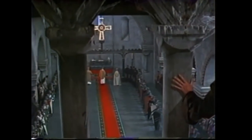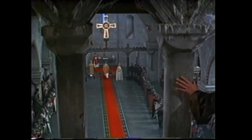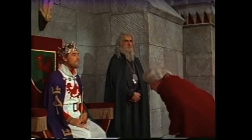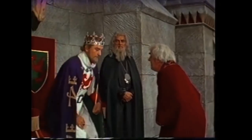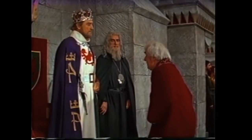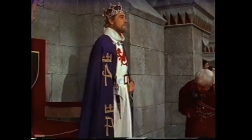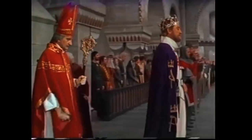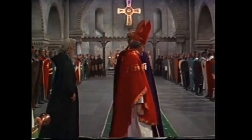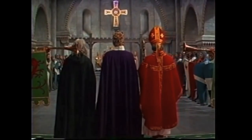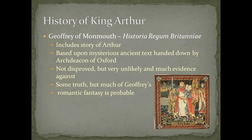Geoffrey went to great lengths to make his Historia appear to be a true history. While there were contemporary scholars who denounced his chronicle — the most well-known example being William of Newburgh — Geoffrey constructed the Historia to appear as a legitimate chronicle. The clearest and first sign of historical legitimization is his use of Latin. As a cleric, it is no surprise that he wrote in Latin, the universal language of the church in the 12th century, as well as the language of official documents.